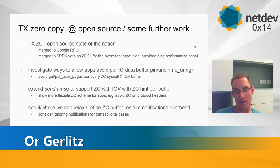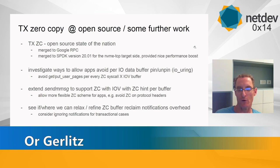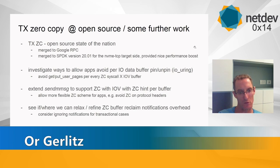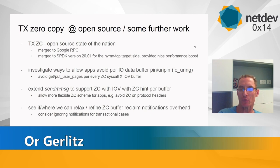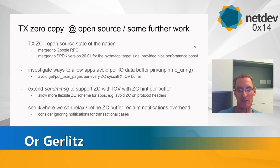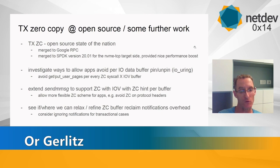Second, a low-hanging fruit would be to extend sendmmsg — like sendmsg but sending M iovec buffers in one call — so an application can provide the socket provider a batch of buffers in one system call, with a per-buffer hint for whether to use zero copy. Third, we should see where we can relax or refine the buffer reclaim notification overhead. In our case, a transactional application let us skip it entirely, but we should investigate whether this applies more broadly.